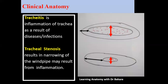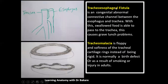Clinically, we could have tracheitis, which is inflammation of the trachea resulting from infection or disease. Tracheitis can lead to stenosis — narrowing of the canal due to swelling. Tracheal stenosis can also result from congenital abnormality, where incomplete canalization during development leaves a smaller lumen.